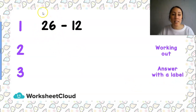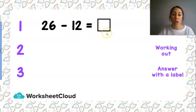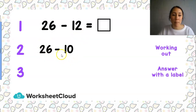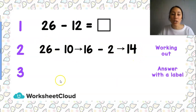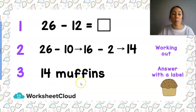Now let's put it in our three steps. Number sentence: 26 minus 12 equals a block. For our working out, we use the arrow method again. 26 stays the same, and 12 is a 10 and a 2. First we minus 10, and the answer is 16. Then we minus 2, and the answer is 14. Now I write my answer with a label — I was working with muffins — so I have 14 muffins.